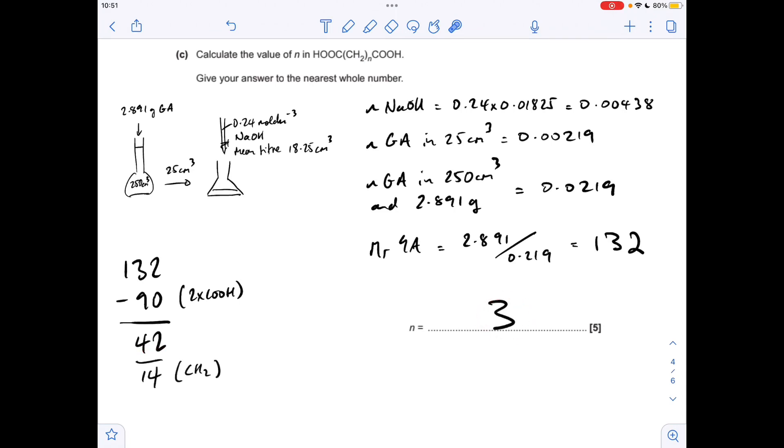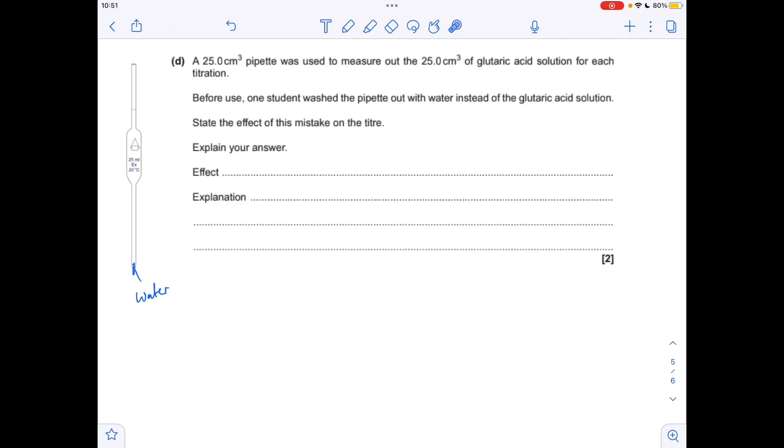And the final part of the question. The student has washed out the pipette with water rather than the glutaric acid, so there's a tiny bit of water left inside this pipette, so they make it up to the mark for the titration. The problem we've got is there's less glutaric acid in this pipette. If there's less glutaric acid in there, they're going to be using less moles, therefore the titre is going to be lower.